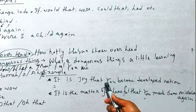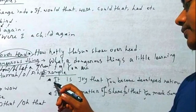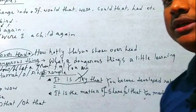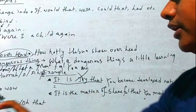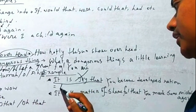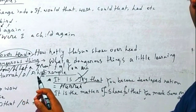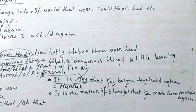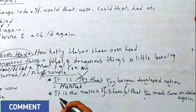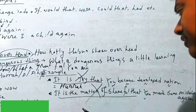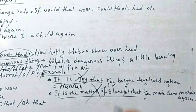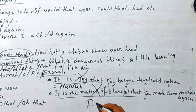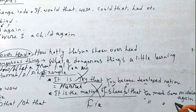For example: 'It is joy that you have become a developed nation.' Here 'it is joy that' — the full phrase and the dependent clause — should be omitted. Joy changes into 'hurrah,' so we include 'hurrah' or 'oh' or 'ah': 'Hurrah! You have become a developed nation!' Another example: 'It is a matter of shameful that you made the same mistakes again.' The dependent clause is omitted. 'Shameful' changes into 'phi': 'Phi! You made the same mistakes again!'